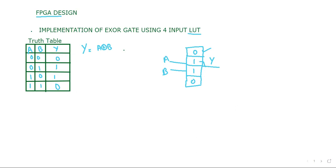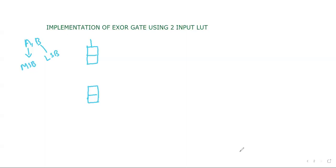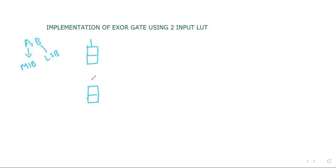So the same thing we can implement with the help of two input LUTs. A two input LUT will have two cells and one selection line. We have A input and B input, where A is the MSB bit and B is the LSB bit, as visible from the truth table. So we need to store four outputs: 0, 1, 1, 0. With a two input LUT we can only store two values.